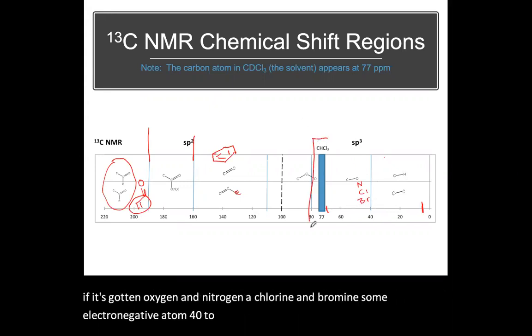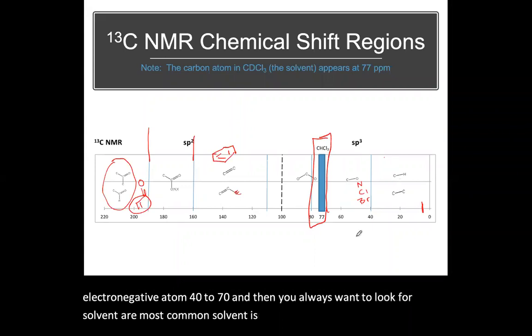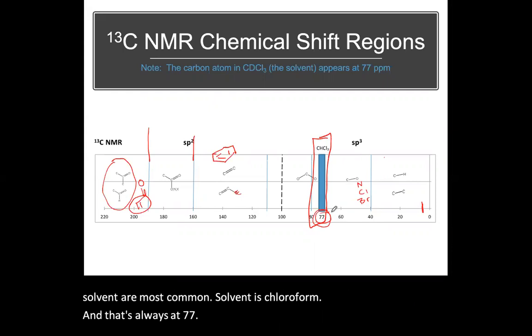And then you always want to look for solvent. Our most common solvent is chloroform. And that's always at 77. Okay, so know those regions. There's a Quizlet linked into the Canvas page for 201 that will test you on these regions. That's a good way to memorize the regions.